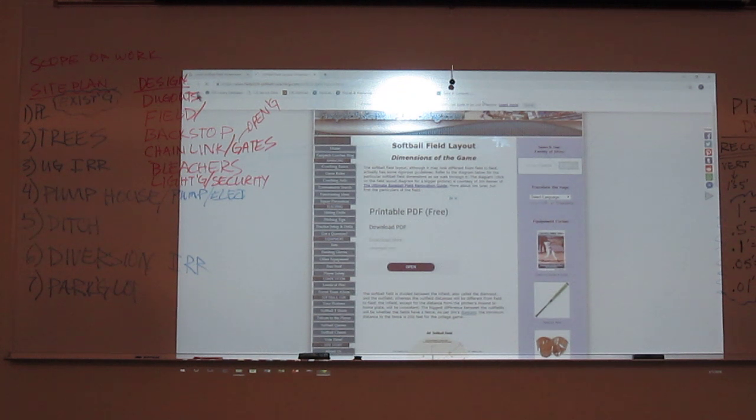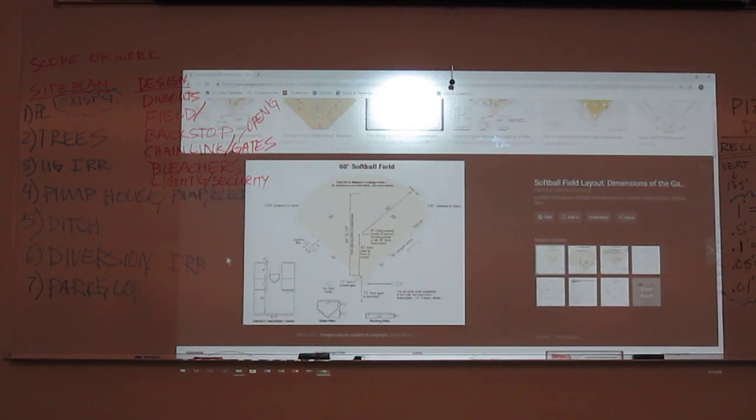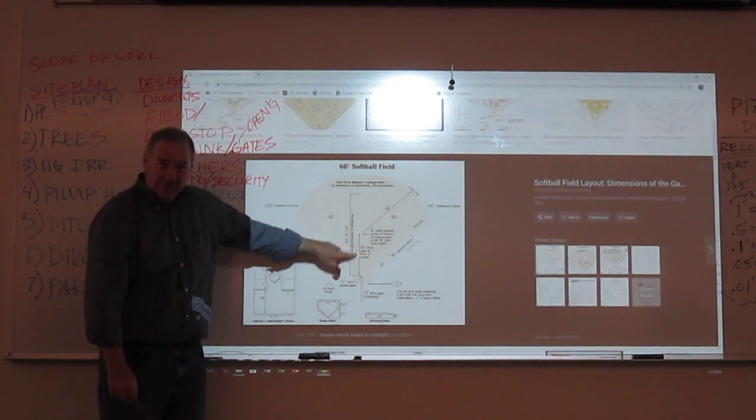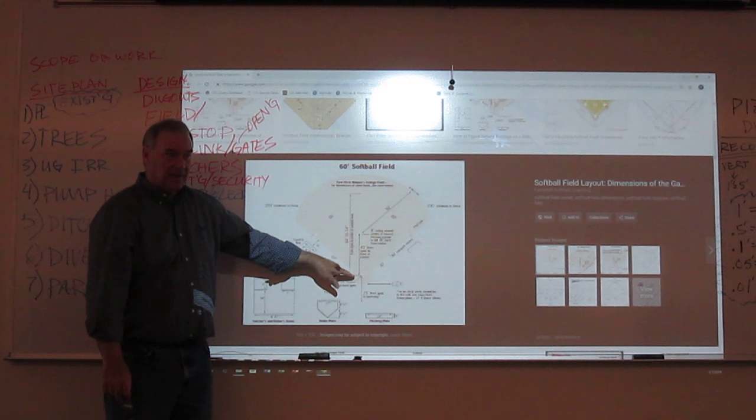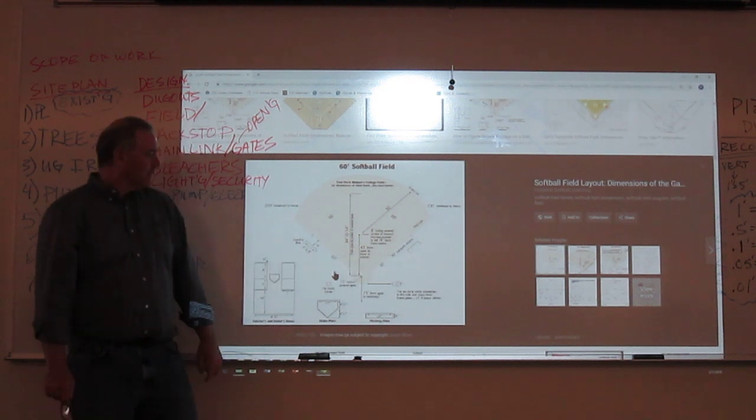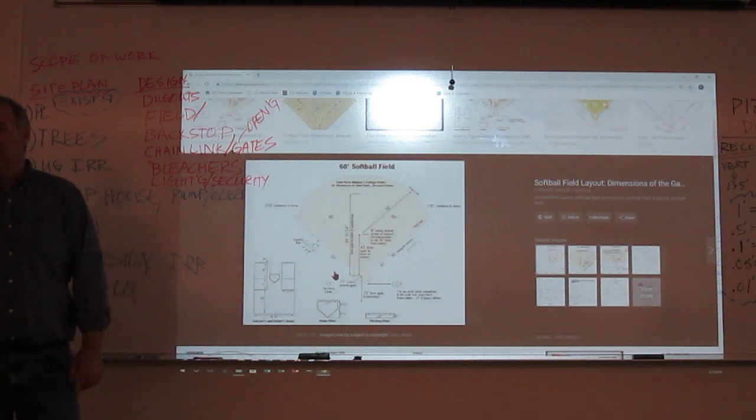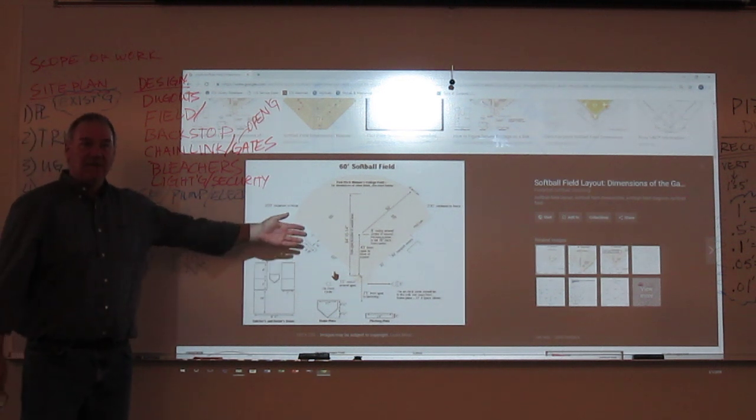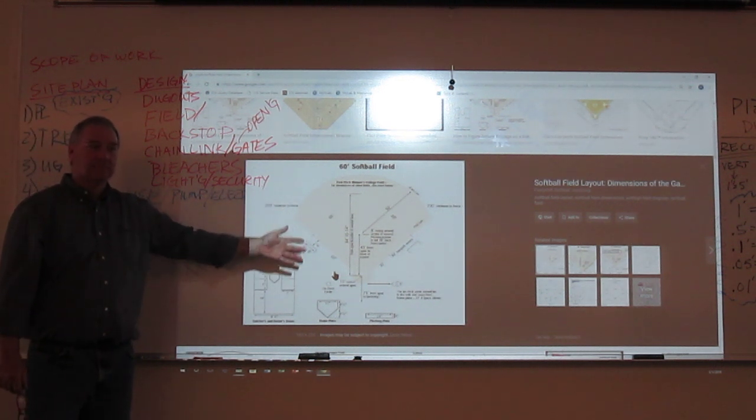By the way, you can print this. There is one change. This one's for a high school field. Notice it says the pitcher's mound is 43 feet. It's 38 feet for you. Pony league and 12 and under softball. It's 38 feet. You can print this, by the way, if you wish. But here's all the dimensions you need to draw that field.